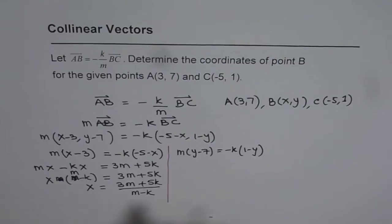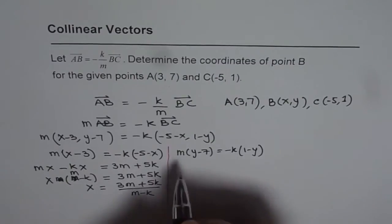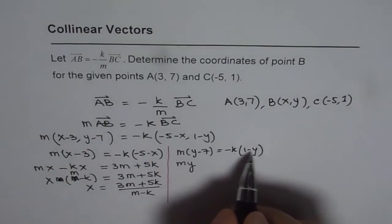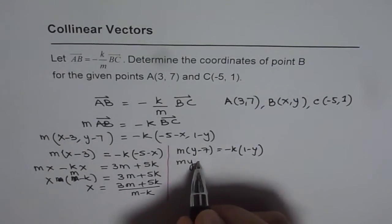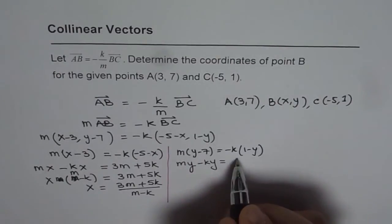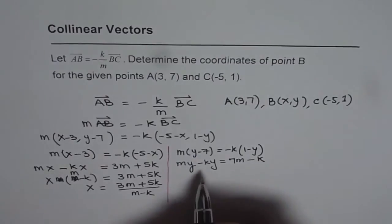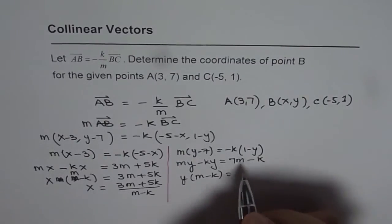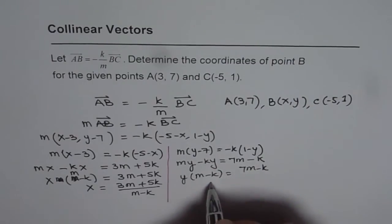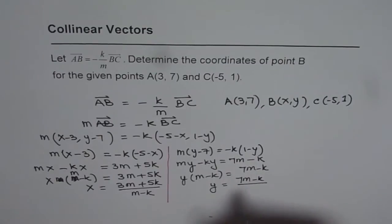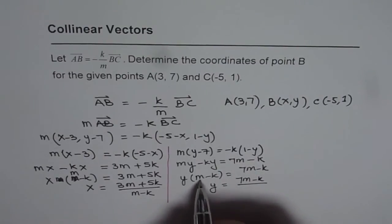To calculate the Y value we will follow the same method. So we get MY, bringing Y terms to the left gives us minus KY equals 7M minus K. Taking Y common, (M minus K)Y equals 7M minus K, or Y equals (7M minus K) divided by (M minus K).